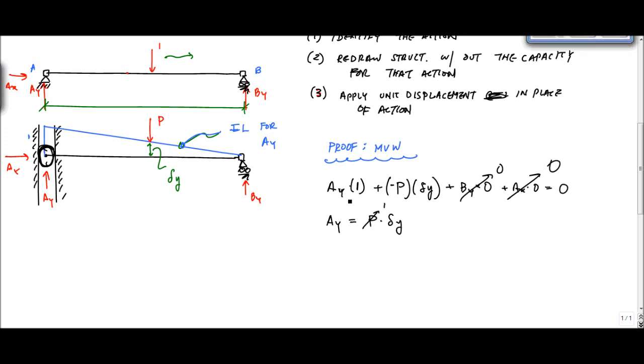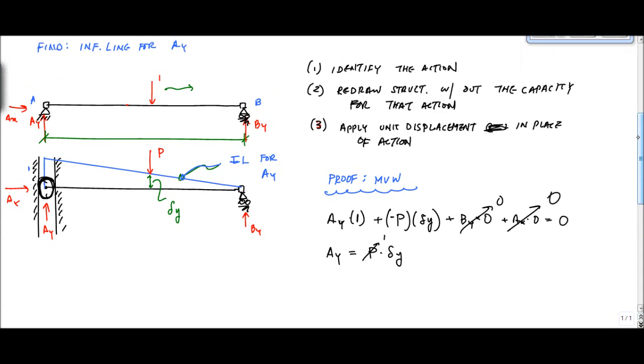All right, so anyway, this is a different proof. This is a pretty simple proof that just says that the reaction at A of AY is related to that displacement or the deflected shape under the point load—the deflected value. But that's the simple proof, whether or not you buy it. What you've got to do is remember that you've got to identify the action and be able to redraw that structure and apply the unit displacement and draw that deflected shape. That's probably the hard part, drawing that deflected shape.